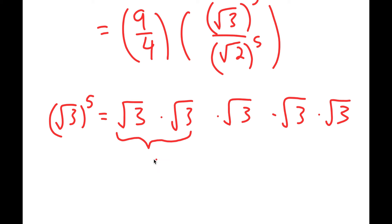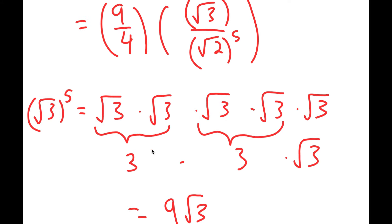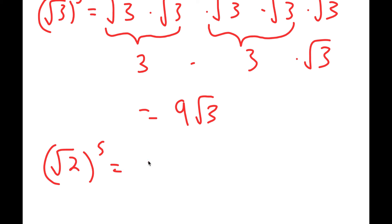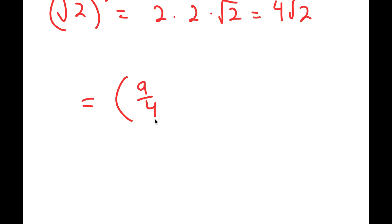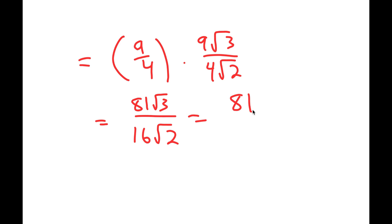The square root of 3 to the power of 5 equals the square root of 3 times the square root of 3 times the square root of 3 times the square root of 3 times the square root of 3. Pairs of square root of 3 make 3, so I get 3 times 3 times the square root of 3, which is 9 root 3. Similarly, the square root of 2 to the power of 5 is 4 root 2. So I get 9 over 4 times 9 root 3 over 4 root 2, which gives 81 root 3 over 16 root 2, and this simplifies to 81 root 6 over 32. So this is my answer.